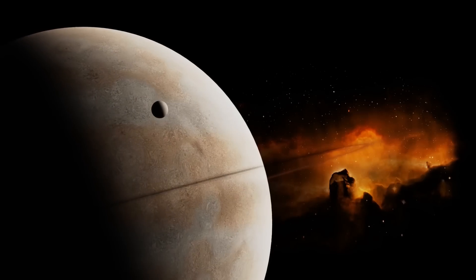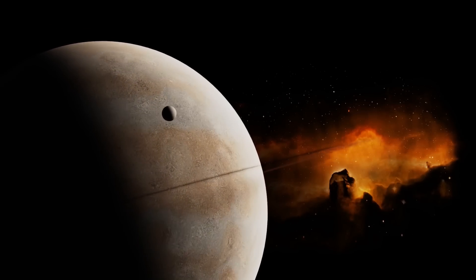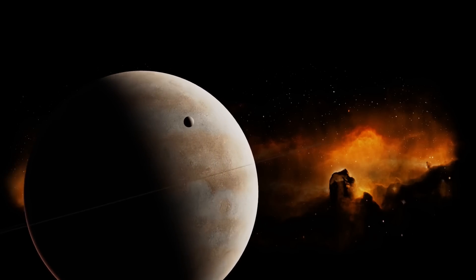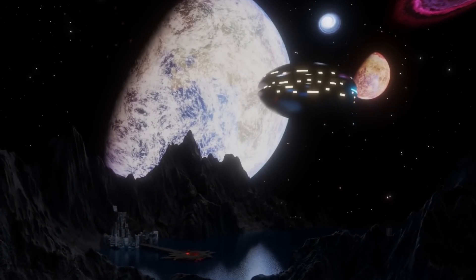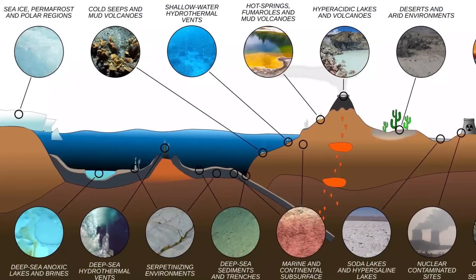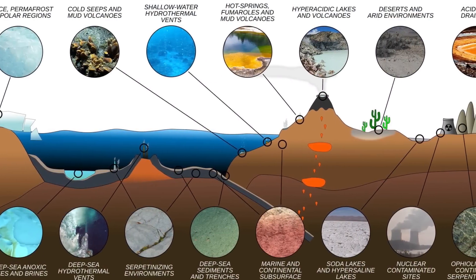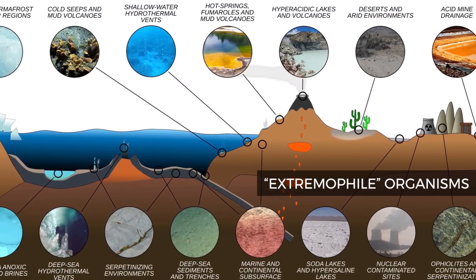However, all these questions may be definitively answered once the new technology is available to inspect the planet at a much more intimate level. Of course, living things on exoplanets might resemble nothing like life on Earth. Sometimes even life on Earth can seem alien, such as extremophile organisms.